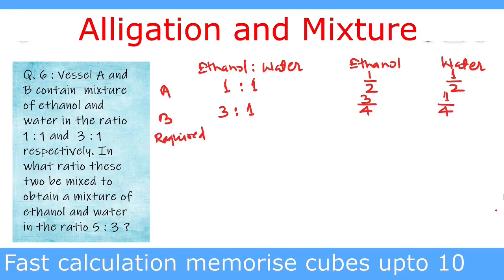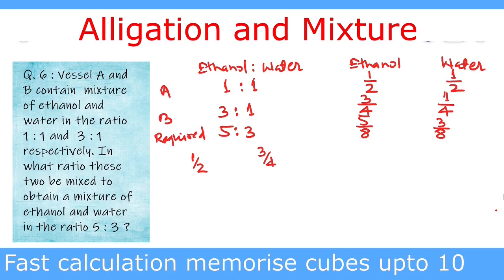Our required ratio of ethanol and water is 5:3, which means we require 5 parts of ethanol in 8 parts, since 5 + 3 = 8, and 3 parts of water in 8 parts. Now we apply the allegation rule, taking ethanol as our base. In vessel A we have 1/2 and in vessel B we have 3/4, so we write 1/2 and 3/4. The required mean value of ethanol in the final mixture is 5/8.